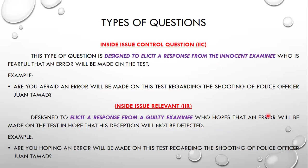Another is the inside issue control question (IIC). This type is designed to elicit a response from examinees who are fearful that an error will be made on the test. Example: 'Are you afraid that an error will be made on this test regarding the shooting of police officer Watanou?' Another is the inside issue relevant (IIR), designed to elicit a response from a guilty examinee who hopes an error will be made on the test so that their deception will not be detected. Example: 'Are you hoping an error will be made on this test regarding the shooting of police officer Watanou?'